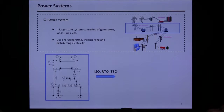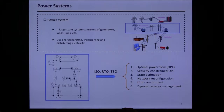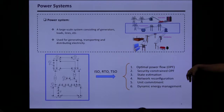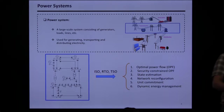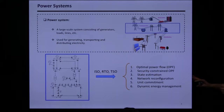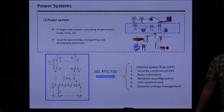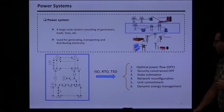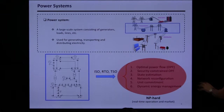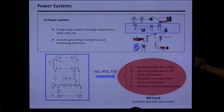The middle part is the heart of the system — that's where we do all the control and optimization. There are different important companies like ISOs (independent system operators) that deal with control. There are different fascinating optimization problems we need to solve regularly: optimal power flow (OPF), security-constrained OPF, state estimation, network configuration, unit commitment, and dynamic energy management. We often take electricity for granted, but there are so many optimization problems to solve every five minutes to make it work.